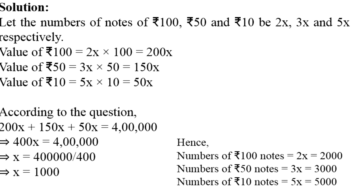तो 200x, 150x और 50x को हम add कर देंगे जो हो जाएगा 400x equal to 4 lakh। यहां से x की value find करने के बाद इसकी हम multiplication कर देंगे 2x, 3x और 5x के साथ। तो x की value हो जाएगी 1000।